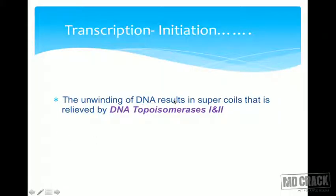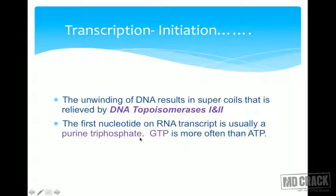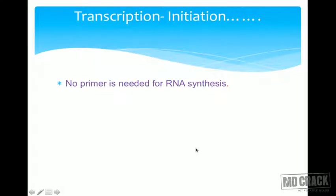This unwinding of DNA results in supercoils, which are removed by DNA topoisomerases 1 and 2. DNA topoisomerase 1 brings about a single-strand nick, whereas DNA topoisomerase 2 cuts both strands, removes the supercoils, and rejoins them. The first nucleotide on the RNA transcript is usually a purine triphosphate — GTP most of the time, then ATP. This is an important MCQ point.